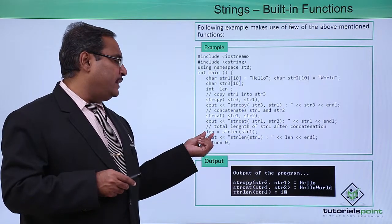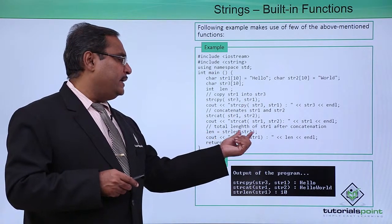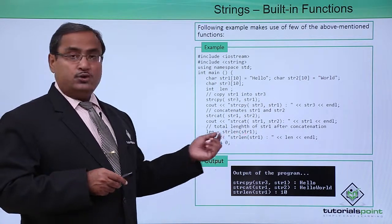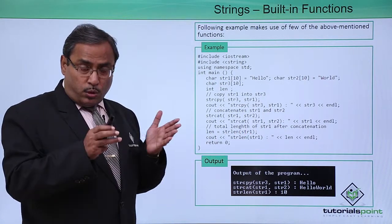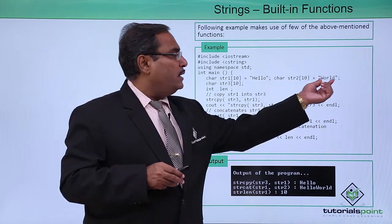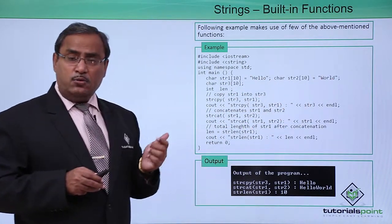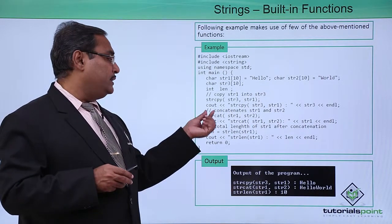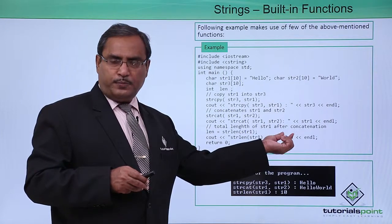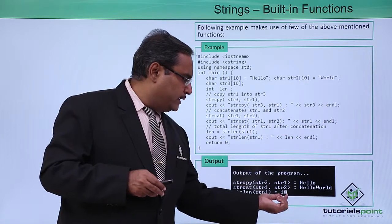We have another one there is len - strlen str1. We are calculating the length of this. Now str1 is holding the hello world. Hello is having 5 letters, world is having 5 letters, so hello world is having 10 letters. This len will get initialized with the value 10. Whenever you are suppose to print this len I am suppose to get this 10 here.